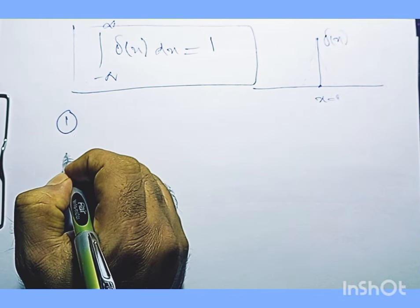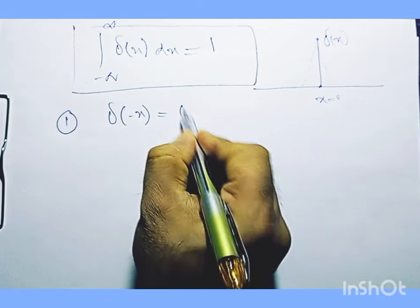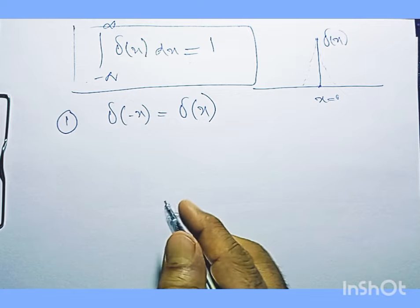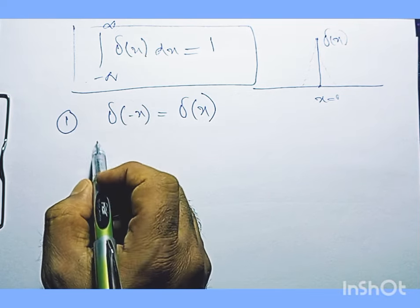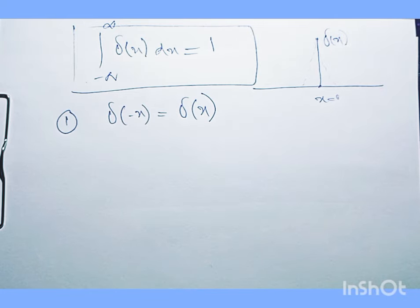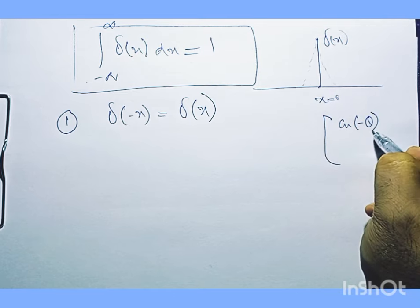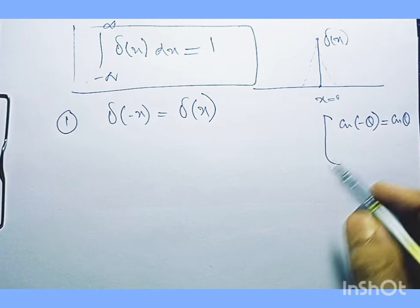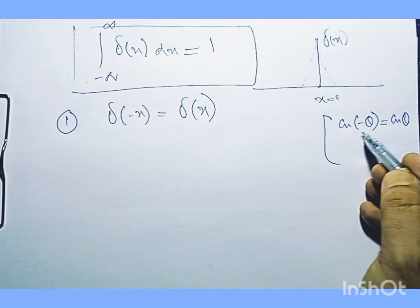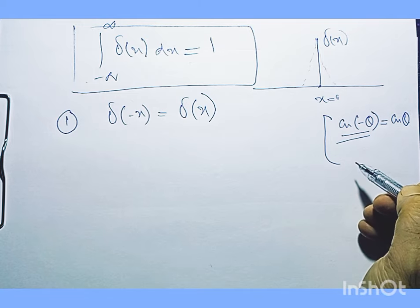The very first important property is that δ(-x) = δ(x). To explain this, we know that for an even function — taking the example of cos(-θ) = cos(θ) — the cosine absorbs the negative sign. So cosine of minus theta is an even function. In contrast, for sin(-θ), the minus sign comes out, making it an odd function.